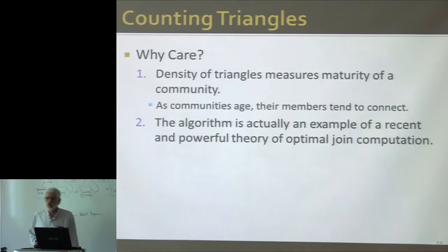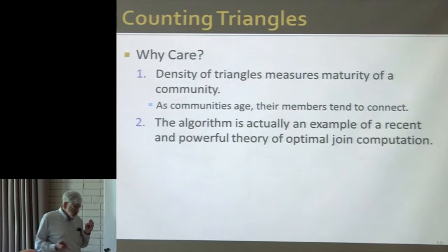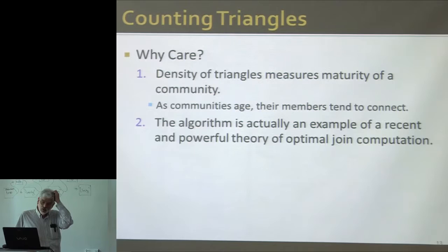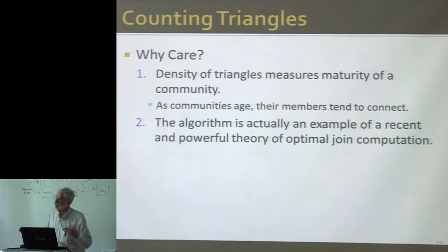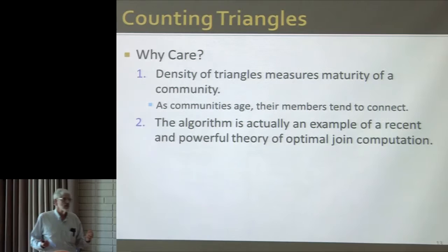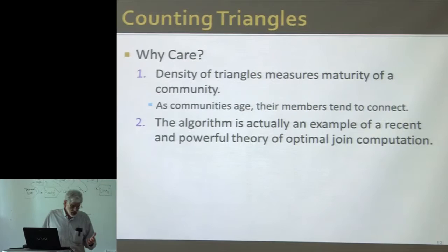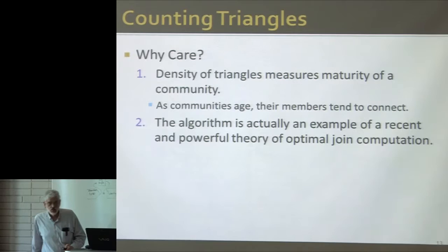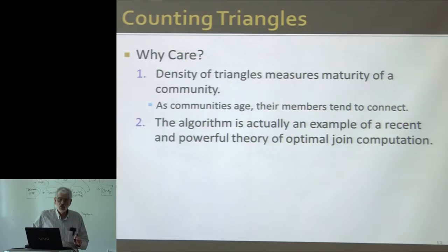What I want to talk about actually turns out to be a special case of a very recent theory of how you do optimal joins of all types. Interestingly, companies like Oracle have been selling database systems for three decades, and it was only about two years ago that people discovered the optimal algorithm for joins. Oracle's algorithm was never and still isn't optimal — there are cases where it takes orders of magnitude more time than the best algorithm.